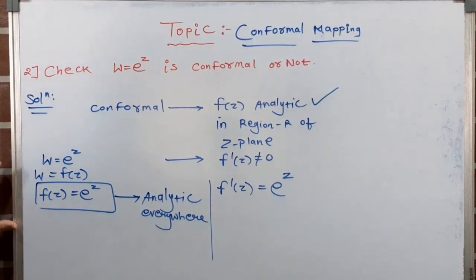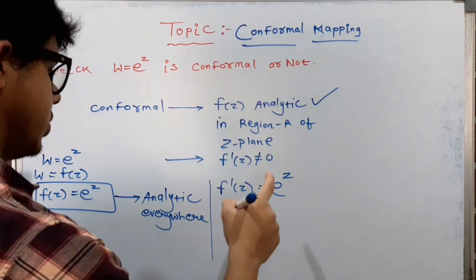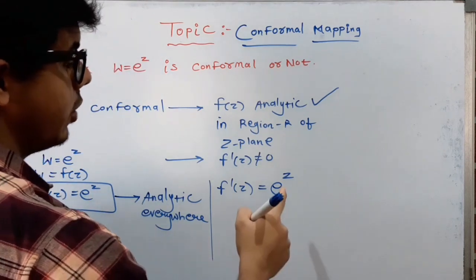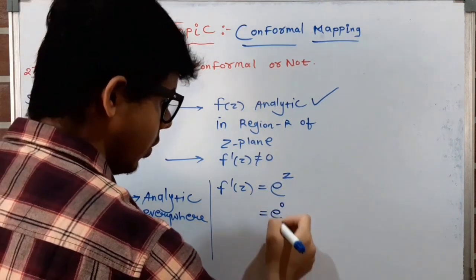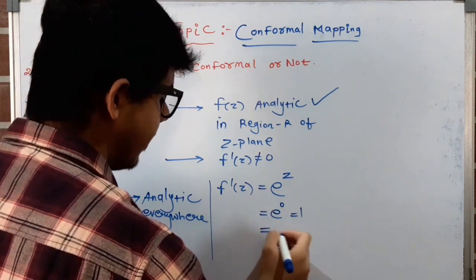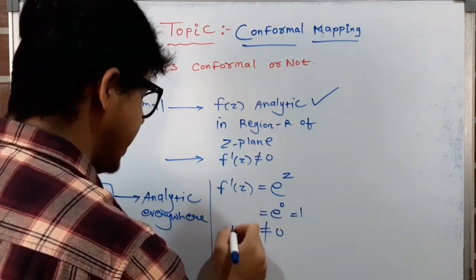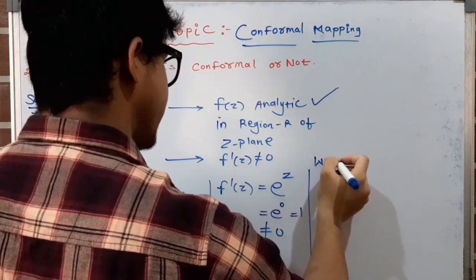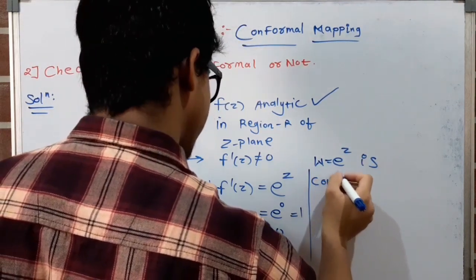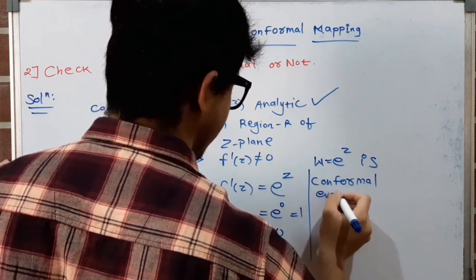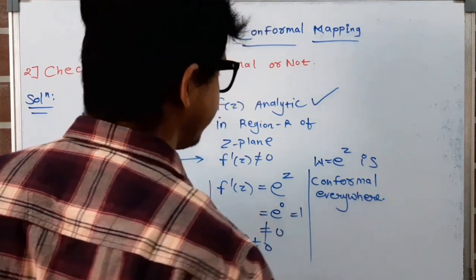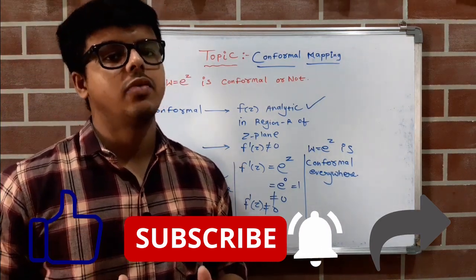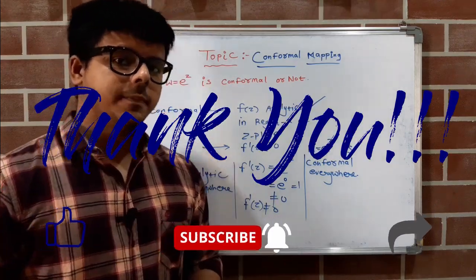Checking the second condition: f′(z) = eᶻ. The exponential function can never equal zero — even when z=0, e⁰=1≠0. So f′(z) is never zero, meaning both conditions are satisfied. Therefore w=eᶻ is conformal everywhere. If you have any doubts please ask in the comment section. Please like and subscribe for more educational videos.